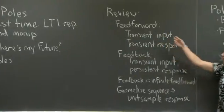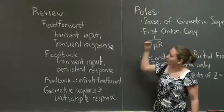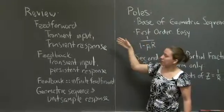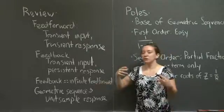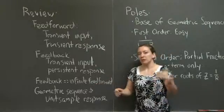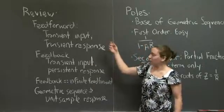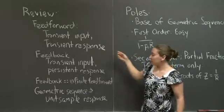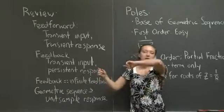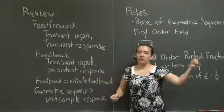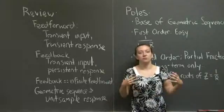First, a quick review. Last time we talked about feedforward systems, and in particular I want to emphasize the fact that if you have a transient input to your feedforward system, you're going to end up with a transient response. There's no method by which a feedforward system can retain information over more than the number of time steps that you feed information into it. Feedback systems, on the other hand, represent a persistent response to a transient input. Because you're working with a feedback system, information that you put in can be reflected in more than one time step, and possibly multiple time steps depending upon how many delays you have in your feedback system.